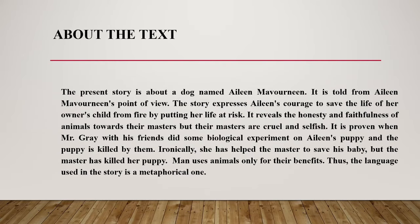The story is about a dog named Aileen Monwin and is told from Aileen's point of view. It expresses Aileen's courage in saving her owner's child from fire by putting her own life at risk. It reveals the honesty and faithfulness of animals towards their masters, but their masters are cruel and selfish — proven when Mr. Grey and his friends conduct a biological experiment on Aileen's puppy, killing it.